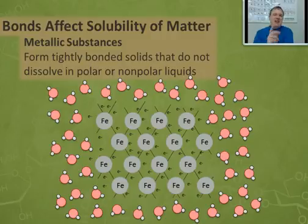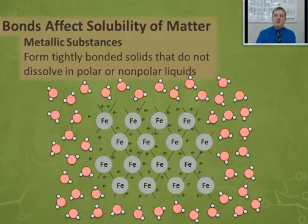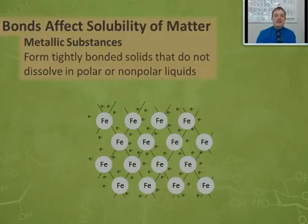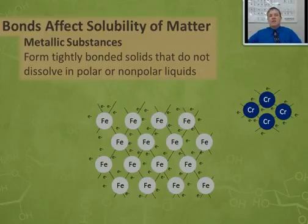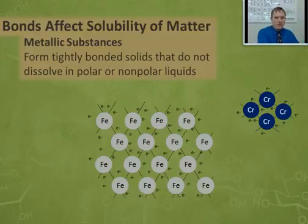Metallic substances can dissolve sometimes, but they do not dissolve in water. Instead, they dissolve in each other. Because metallic substances have a sea of electrons, you can cause the atoms of one metal to share the sea of electrons with another metal. Take, for example, iron and chromium, which mix together to make stainless steel.